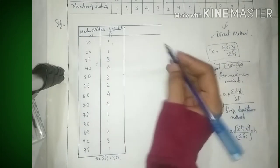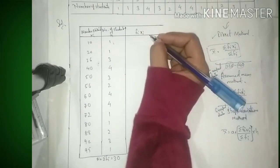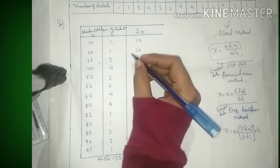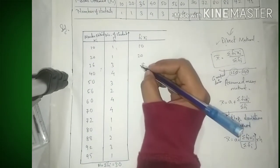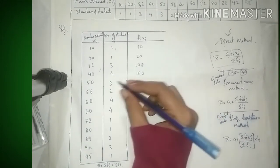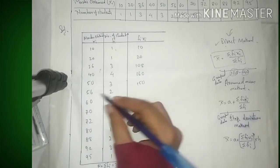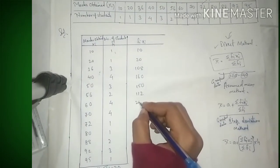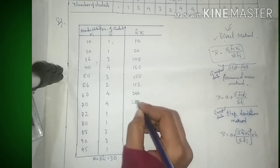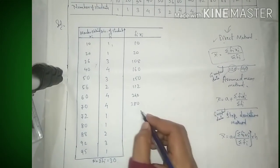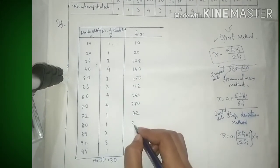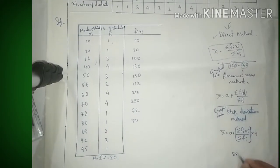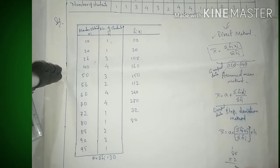अब Σfi·xi find करना है। fi और xi की values multiply करते हैं: 1×10 = 10, 2×20 = 40 (approx), 3×36 = 108, 4×44 = 176, 5×53 = 265... इसी तरह सभी fi·xi values निकालते हैं और table में लिखते हैं। Formula के according table बनाकर Σfi·xi calculate करना है।